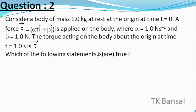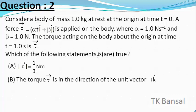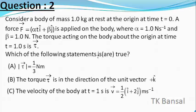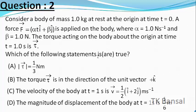Which of the following statements is or are true? The choices are: (A) |τ vector| = 1/3 N·m; (B) τ vector is in the direction of +k̂; (C) the velocity of the body at t = 1 s is V vector = (1/2)(î + 2ĵ) m/s; and (D) the magnitude of displacement of the body at t = 1 s is 1/6 meters.